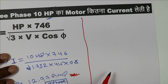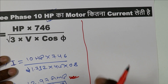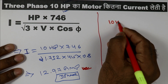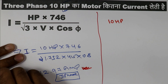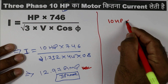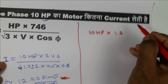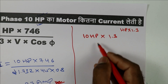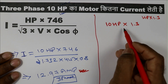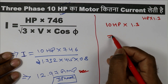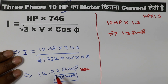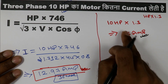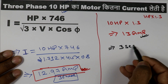Now for the short trick: for a 3-phase horsepower motor, simply multiply the horsepower by 1.3. We have a 10 HP motor, so we multiply 10 HP by 1.3, and we get the answer as 13 ampere. The exact answer was 12.97 ampere — you can see it is almost the same. By using this short trick, you can give the answer in just 3 to 5 seconds.